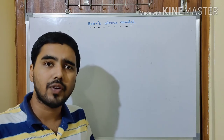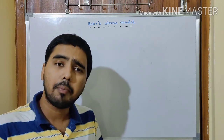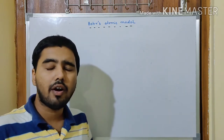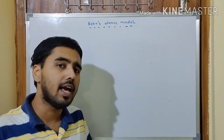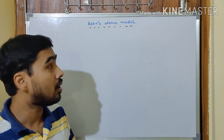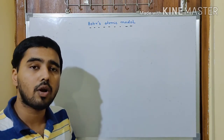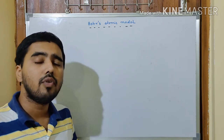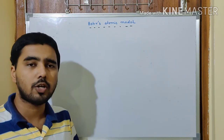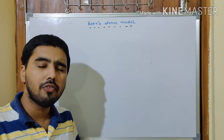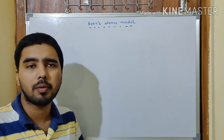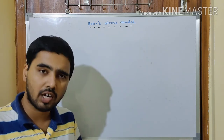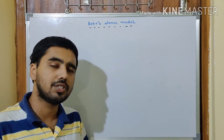Today we are going to see, first of all, what is Planck's quantum theory, because Planck's quantum theory of 1901 actually helped for this atomic model to be evolved. Then we are going to go through the postulates of Bohr's atomic model, and from there we will see what are the outcomes of Bohr's atomic model and whether it could overcome the drawbacks of Rutherford's model.